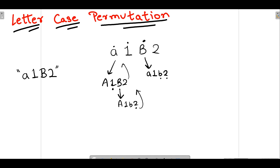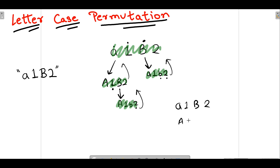Coming back up, since '2' is not a character we do nothing and return. So the permutations we get are: 'a1b2', 'A1B2', 'A1b2', and 'a1b2' — the original string itself is also one of its permutations. So we have four strings as our answer, and this is how we find all letter case permutations.